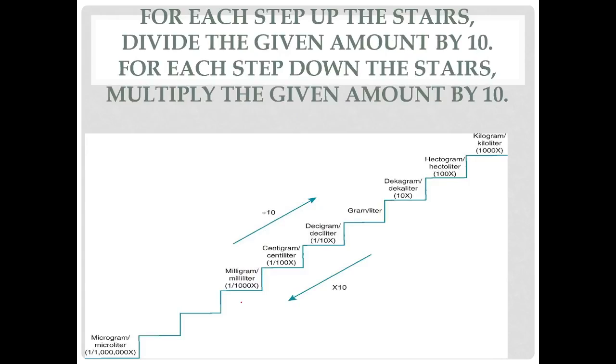For each step up the stairs. So if we're going from the, this is the base, the gram. So microgram is one millionth of a gram. So for each step up, we're going to divide the amount by 10 and each step down, we're going to multiply by 10. So if I want to take gram to microgram, how many grams are in a microgram? Or how many micrograms are in a gram? I'm going down the steps. How many micrograms are in a gram? I'm going to multiply by 10. So I have one gram times 10 times 10 is 10 times 10 is 100 times 10 is 1,000 times 10 is 10,000 times 10 is 100,000 times 10 is a million.